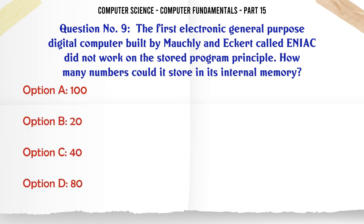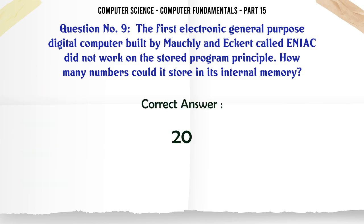The first electronic general-purpose digital computer built by Mauchly and Eckert called ENIAC did not work on the stored program principle. How many numbers could it store in its internal memory? A. 100 B. 20 C. 40 D. 80. The correct answer is 20.